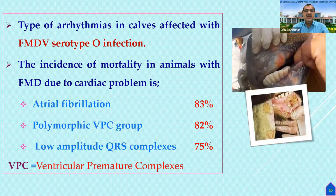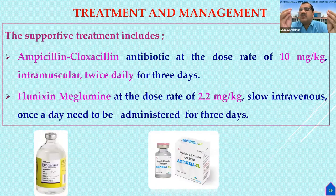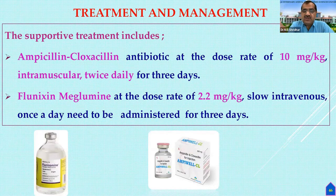For FMD type O — the most common variant — the incidence of mortality due to cardiac problems shows atrial fibrillation at 83 percent, polymorphic VPC group at 82 percent, and low amplitude QRS complex at 75 percent. VPC means ventricular premature complex. Most of the time, death is due to atrial fibrillation, or a combination of arrhythmias.